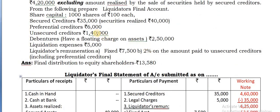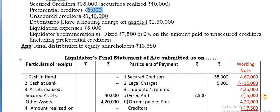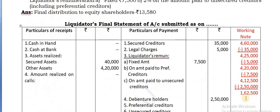Now, what is the amount available? The amount payable is 6,000. But what is the amount available? 1,62,000. So full cash is there. Therefore, allocate now 6,000 into 2%, which gives you 120.